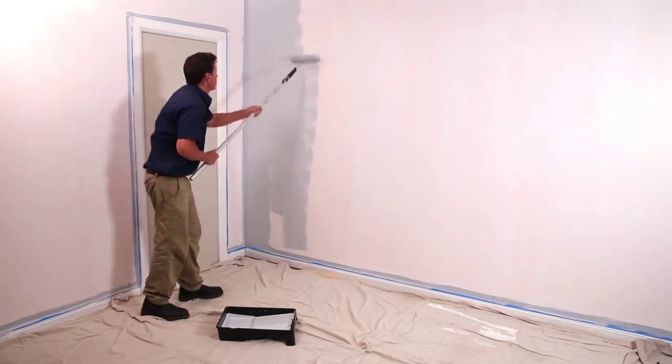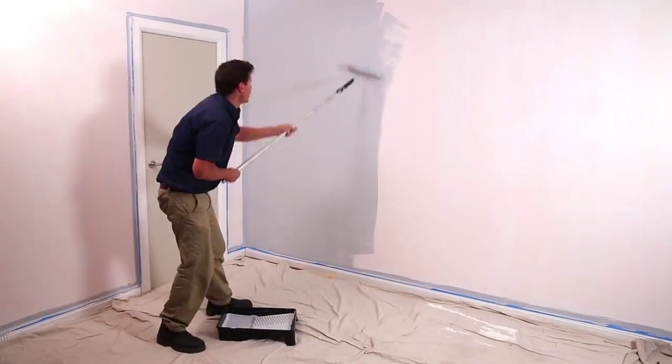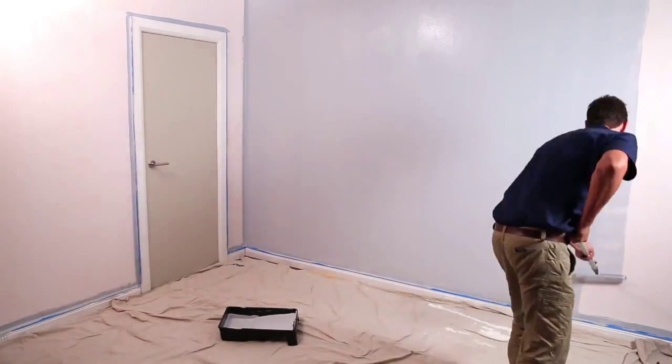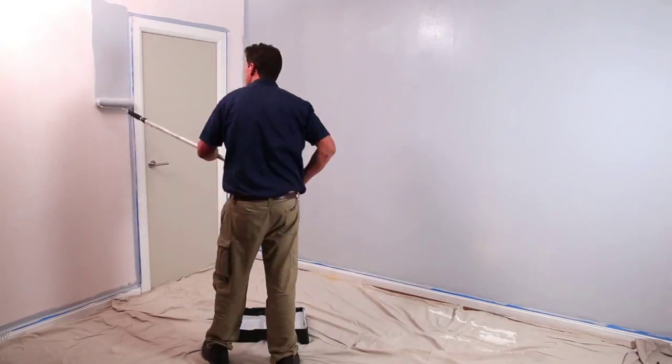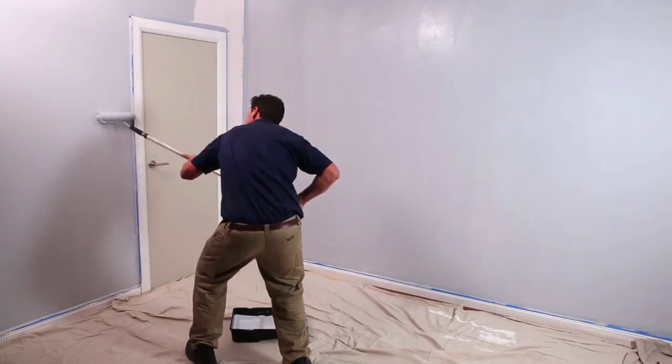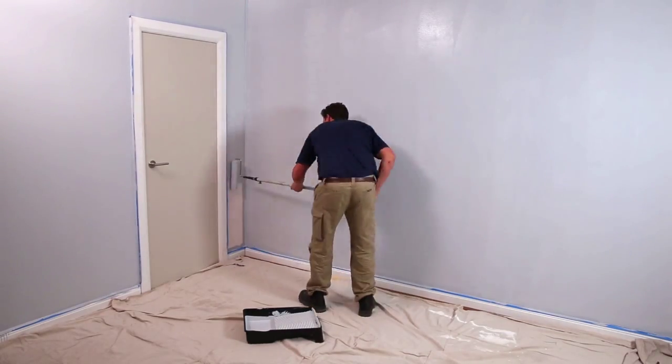Starting from the edge where you already cut in, use a W-shape motion to apply paint across the entire wall, reloading your roller cover when you need to. Work into the sections you've already cut as closely as you can to eliminate brush marks.